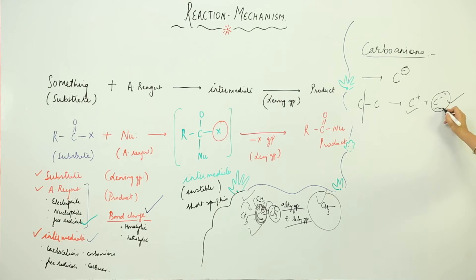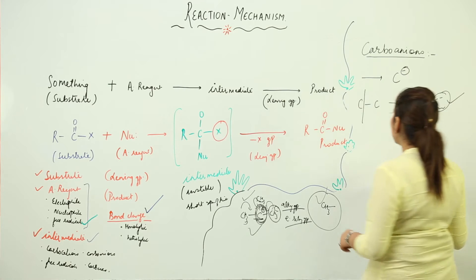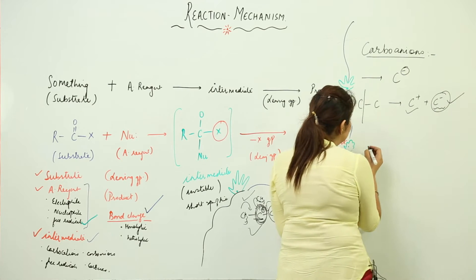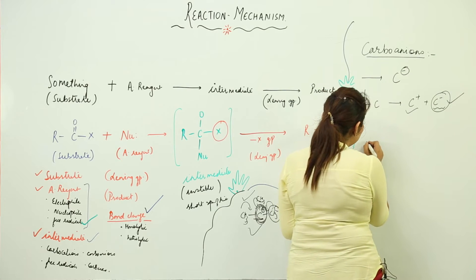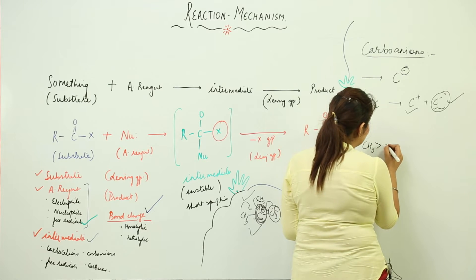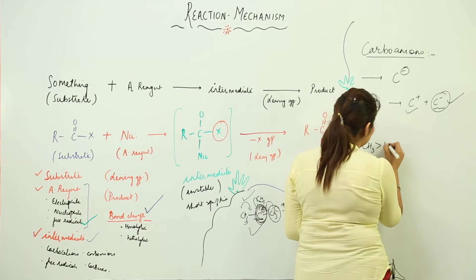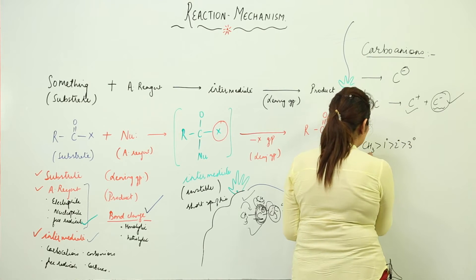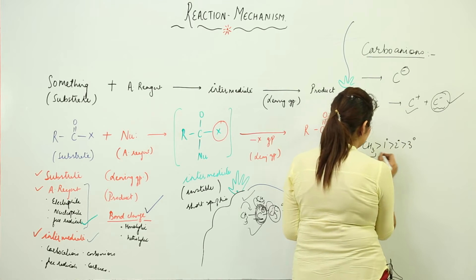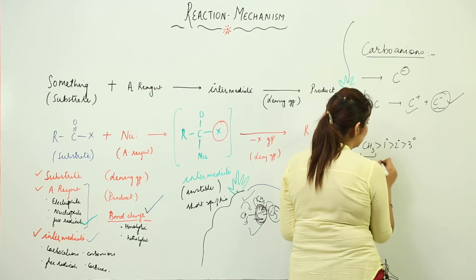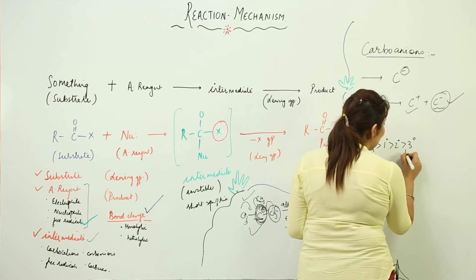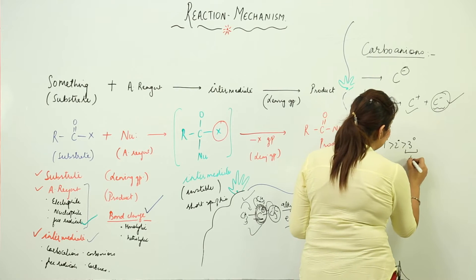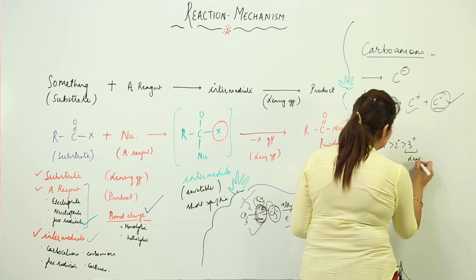So this is what a carbanion is. If we talk of the stability, its stability is actually the reverse of the free radical and the carbocation. It is stable in this order: the methyl group is more stable, and the tertiary (3°) is the least stable.